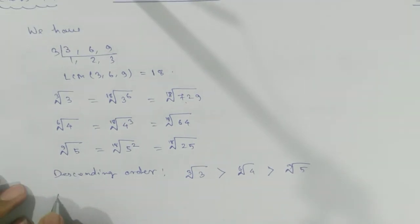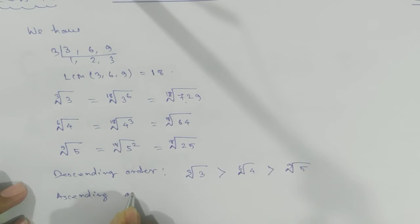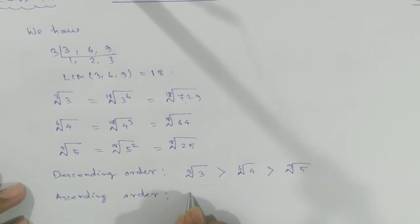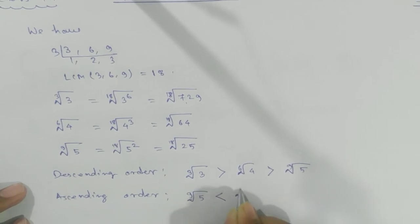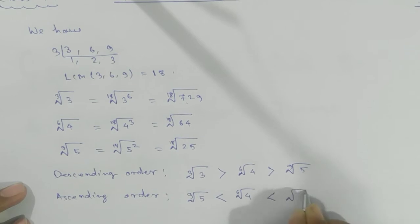And then 9th root of 5. Same thing, two questions have been asked. Ascending order: reverse this one. 9th root of 5, 6th root of 4, cube root of 3.